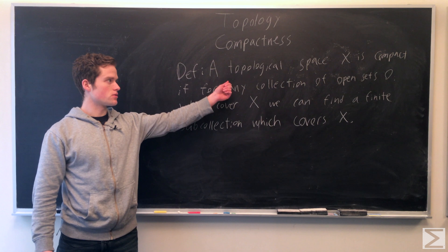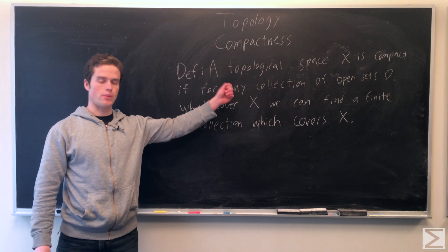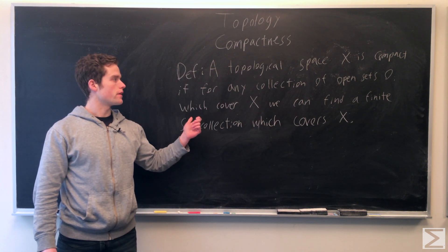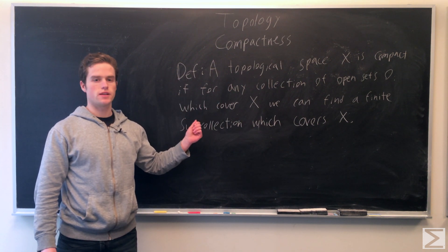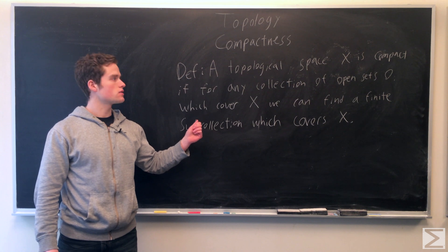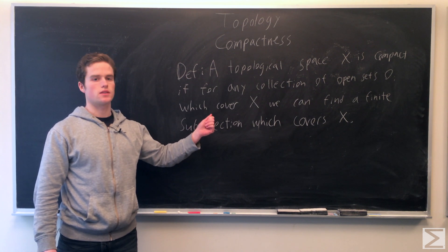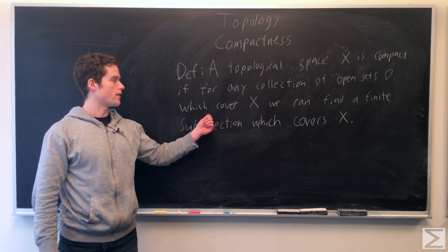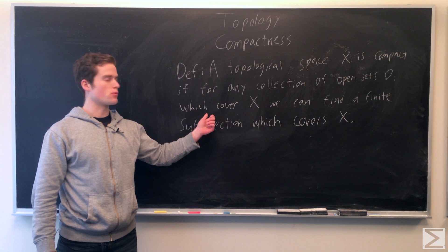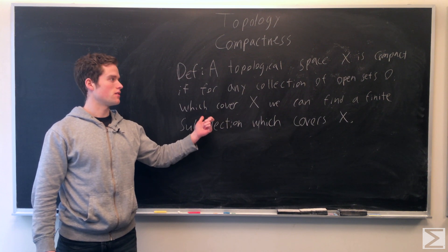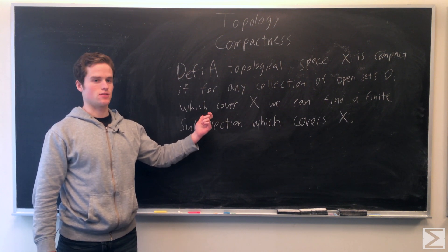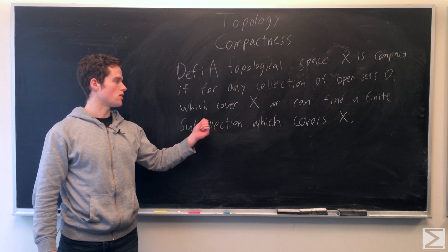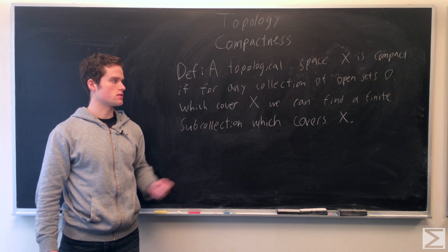A topological space X is compact if for any collection of open sets which cover X — so the union of all open sets contains X — we can find a finite number of these open sets, a subcollection, such that the union of this finite number of open sets also covers X.